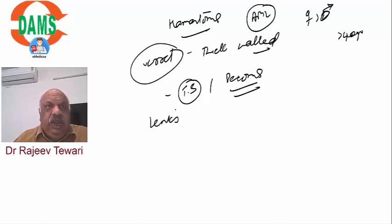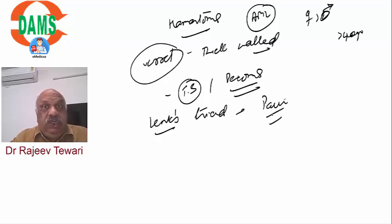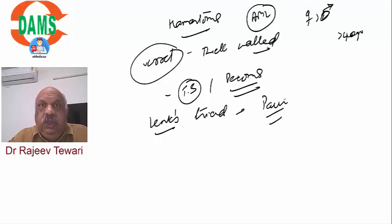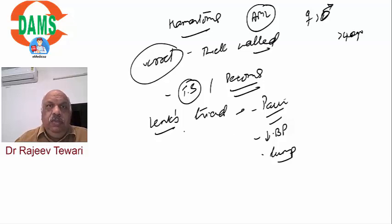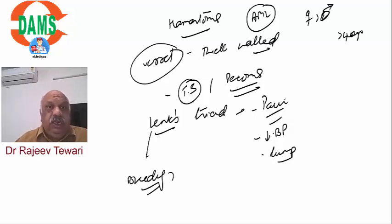Presentation of AML is the Lenk triad: pain, lump, and hypotension - all due to bleeding. Hematuria is not very common because bleeding is not in the collecting system; it is retroperitoneal or within the kidney. Spontaneous bleeding of AML is called Wunderlich syndrome, which causes the Lenk triad of pain, lump, and hypotension.